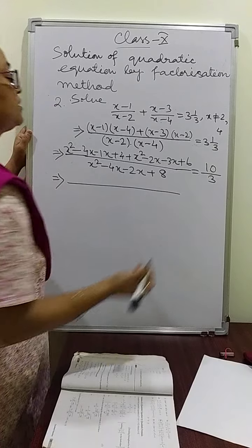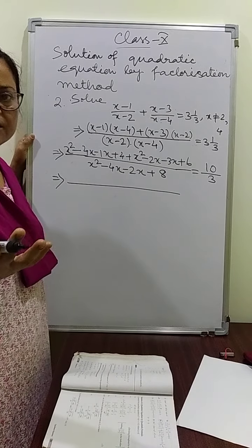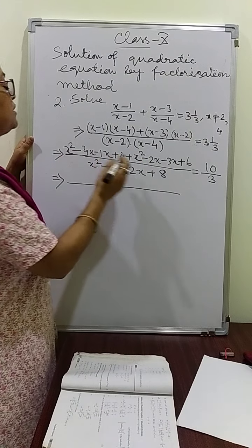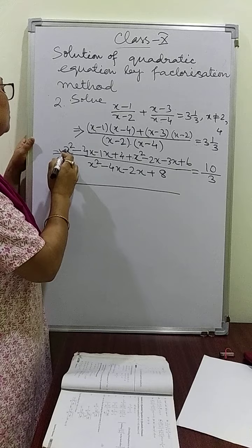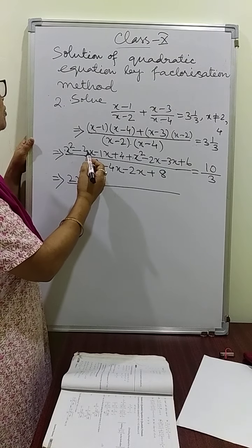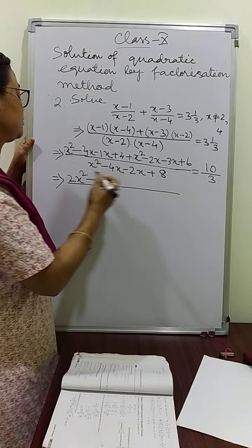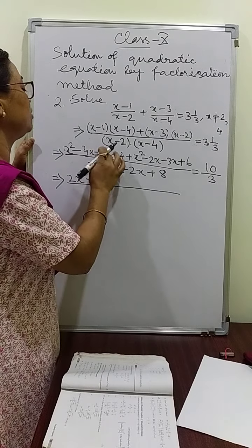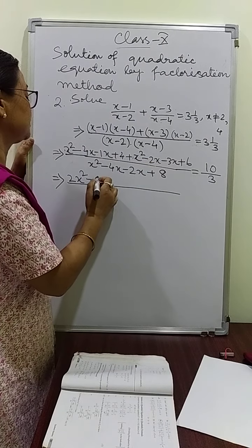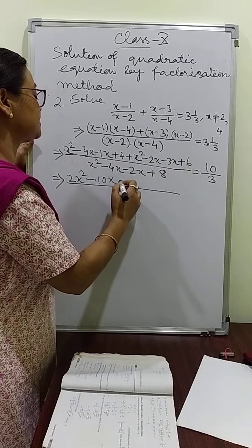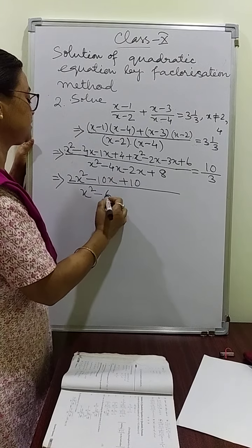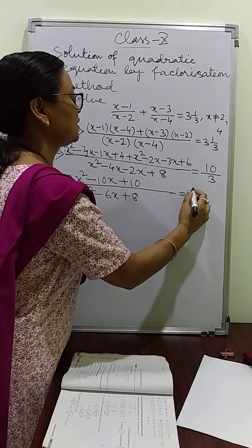Now let us add and subtract. Combining like terms: x squared plus x squared gives 2x squared. All x terms are minus: minus 4x minus x minus 2x minus 3x gives minus 10x. Constants: 4 plus 6 gives 10. Denominator: x squared minus 6x plus 8. Equal to 10 by 3. Now you cross multiply.